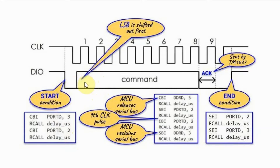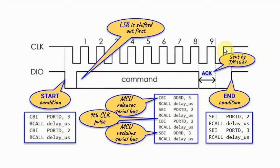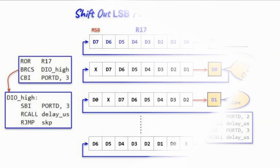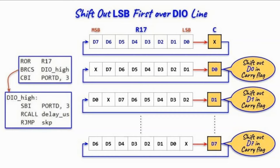After the start condition is initiated, the microcontroller serially sends the byte over the bus, least significant bit first. After eight clock pulses the microcontroller releases the bus so the TM1637 can send the acknowledgement pulse. After sending the pulse, the microcontroller regains the bus and sends the end condition, which is initiated by pulling the clock high and then pulling the data line high.